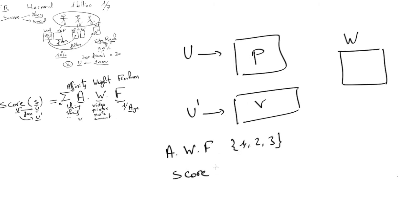We might compute the score of the picture P with respect to user W as follows. Assume W is a friend of U, not a big fan, but a fan. So the score could be: the affinity is 2, the weight of the picture is 2, and the freshness initially is maximum at 3. So this is 2 times 2 times 3, which equals 12. This is the score of P for user W.